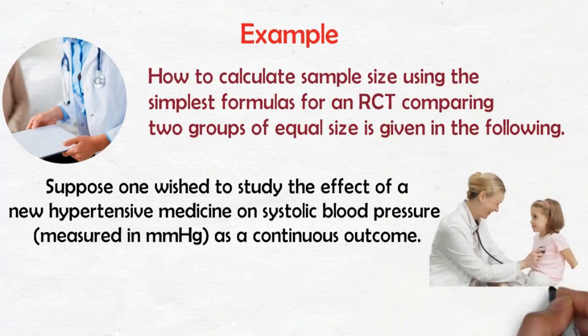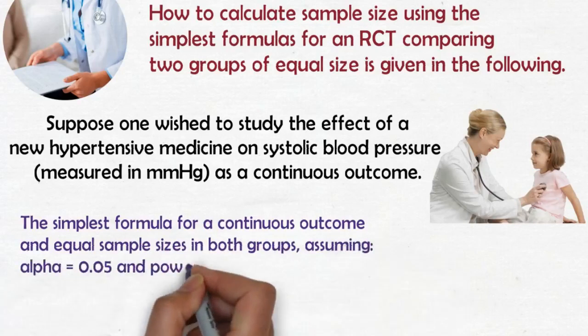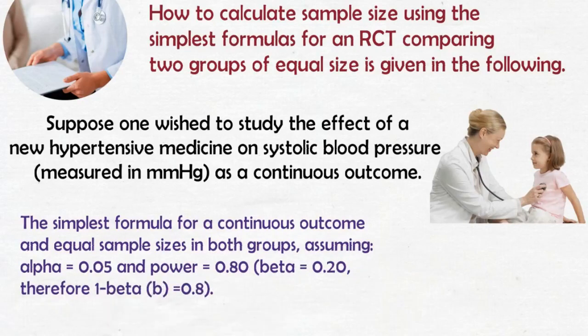The simplest formula for a continuous outcome and equal sample sizes in both groups, assuming alpha equals 0.05 and power equals 0.80 (beta equals 0.20, therefore 1 minus beta equals 0.8).